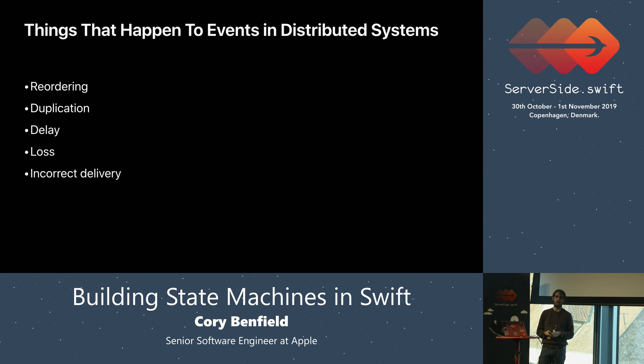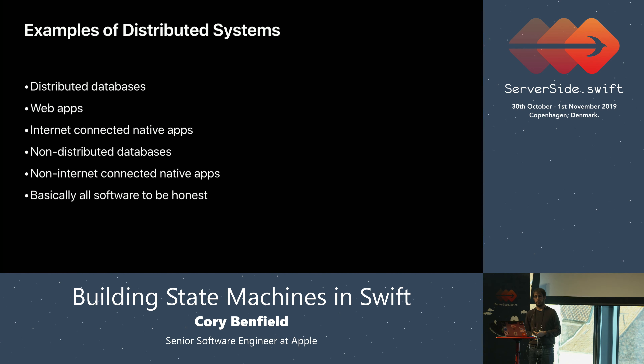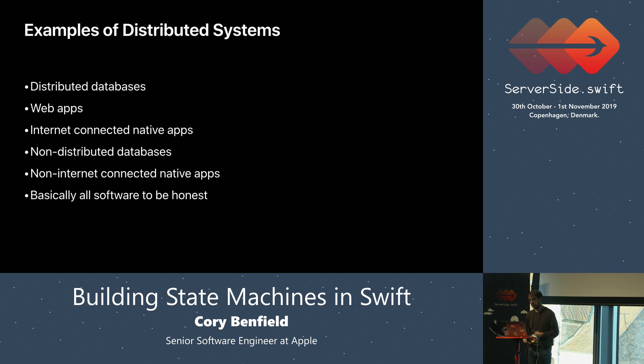So that sounds pretty bad. It's a good thing that most of us don't work with distributed systems — right? I have bad news. The canonical example of a distributed system is a high-availability distributed database, something like etcd used in Kubernetes. Its job is to help you not have to think about distributed systems problems by thinking about them itself. But a simpler example of a distributed system is a website.